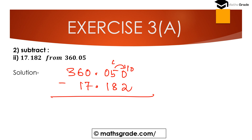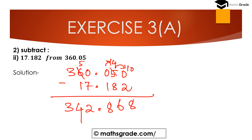The 5 becomes 4 after the carry, so 10 minus 2 is 8. Now 4 minus 8 is not possible, so we carry 1 from the 10th place, making it 14. 14 minus 8 is 6. This 0 becomes 9, and 9 minus 1 is 8. The next 0 becomes 9, and 9 minus 7 is 2. Now this 6 becomes 5 after borrowing; 5 minus 1 is 4. Then we get 3, 3. The result is 342.868.